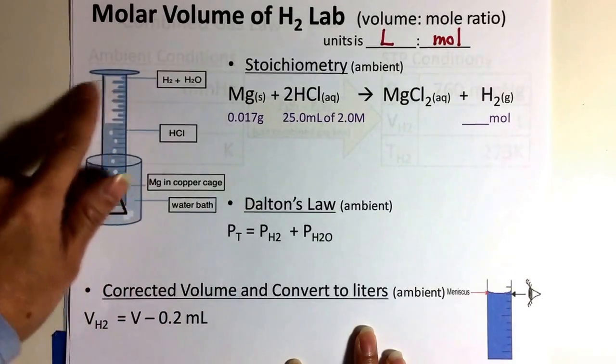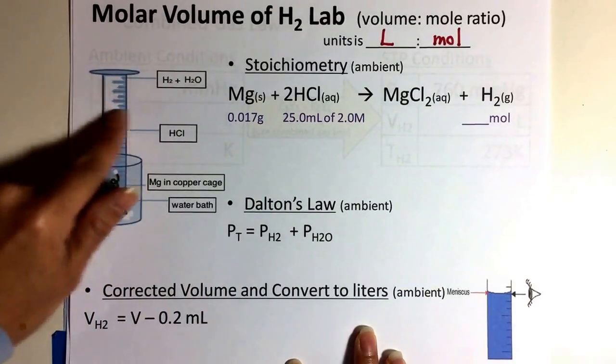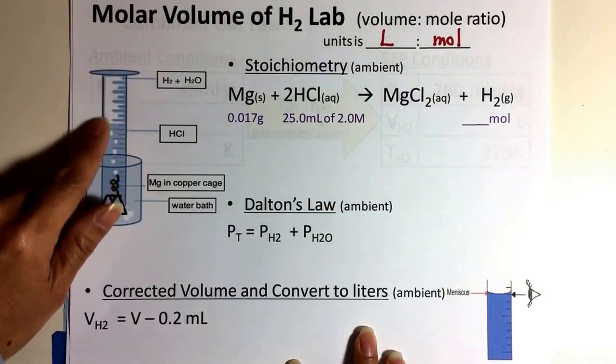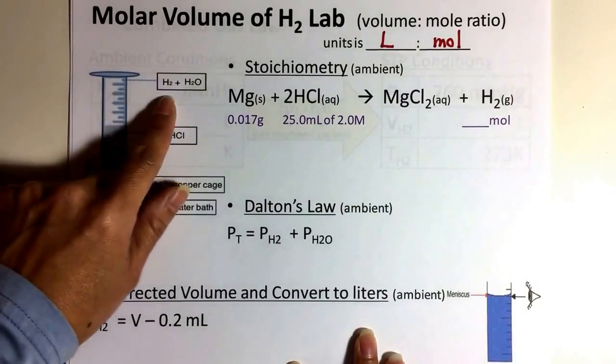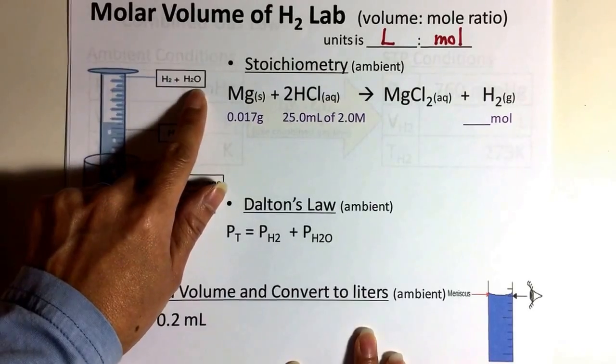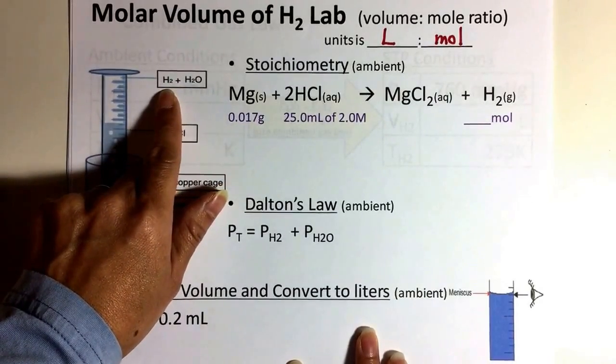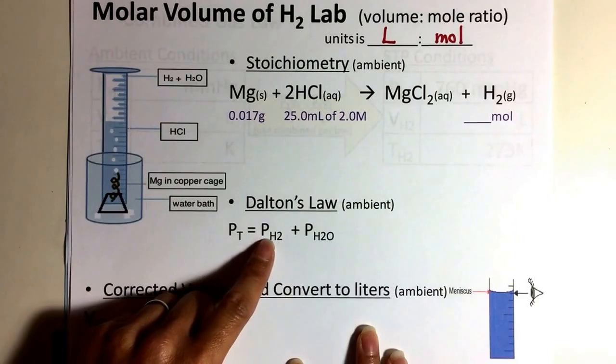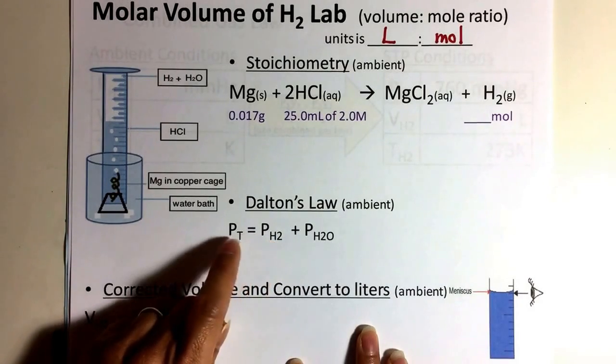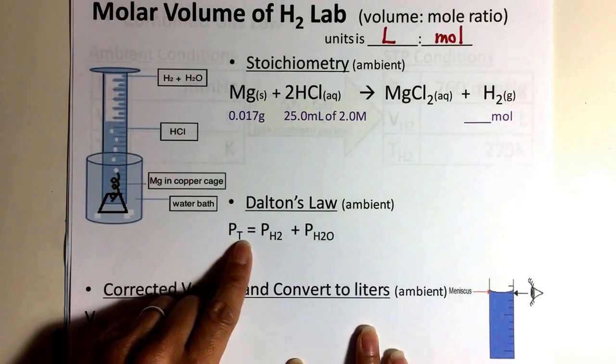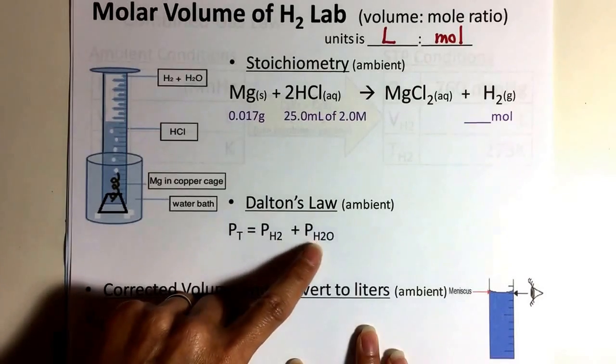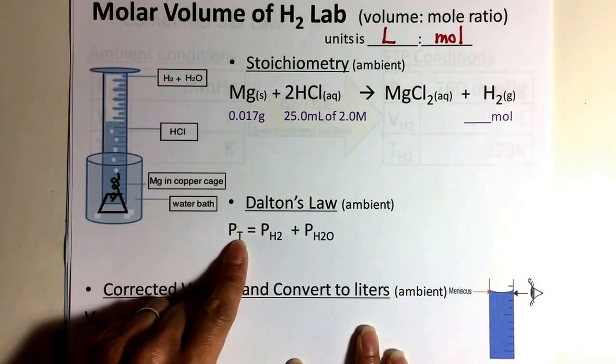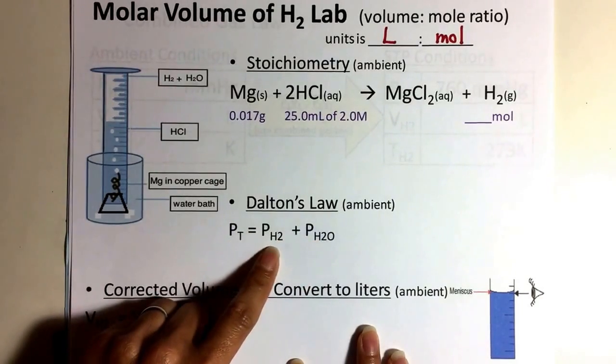So the hydrogen gas that you mainly collect over water is really going to be composed of hydrogen and water, some water, mostly hydrogen. So to find the pressure of hydrogen, that's what you're looking for, you must subtract the vapor pressure from the total ambient pressure to get the partial pressure of hydrogen.